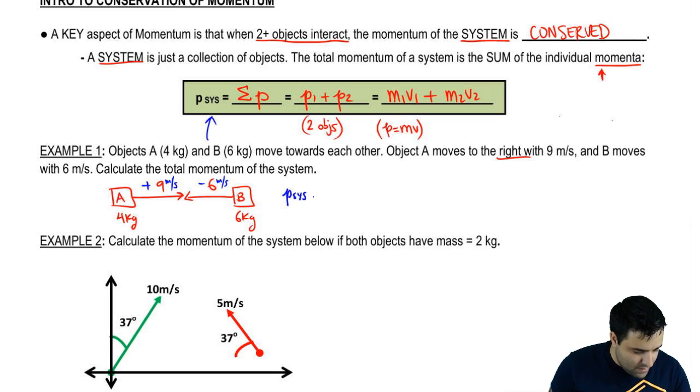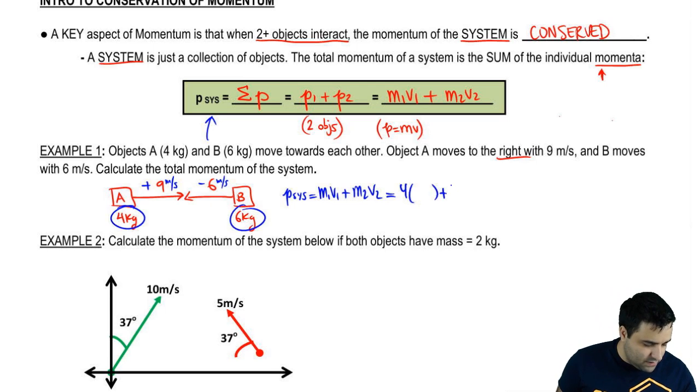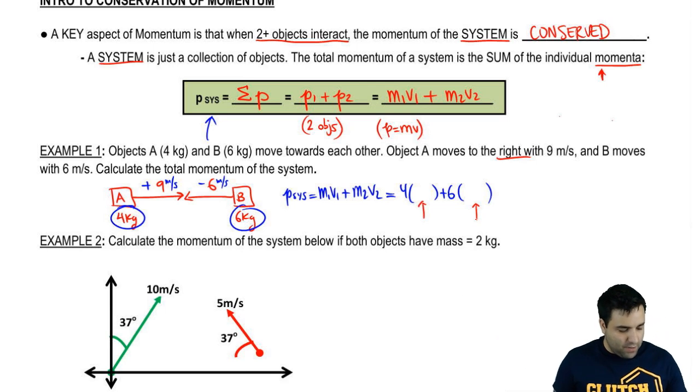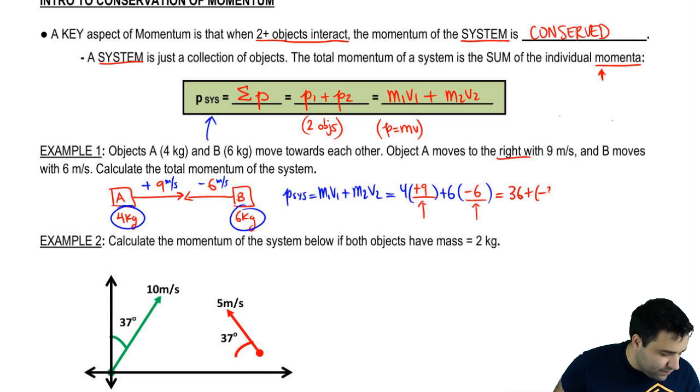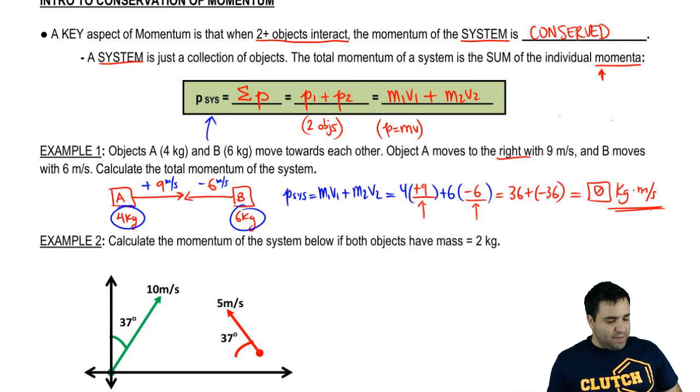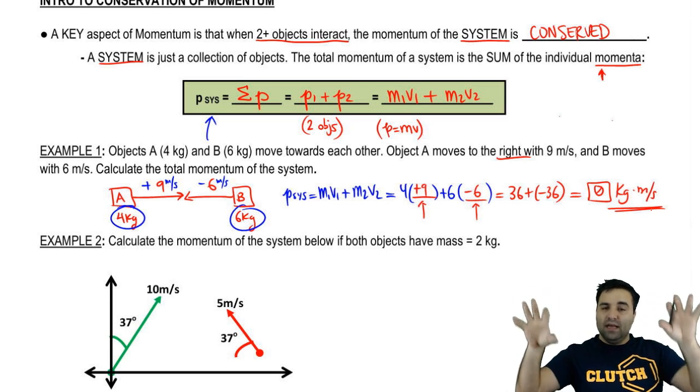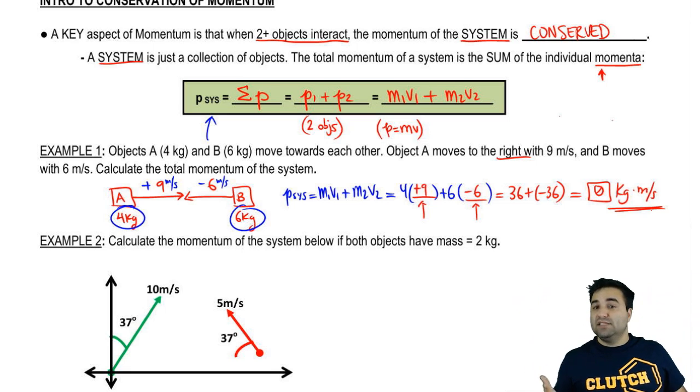P system is M1V1 plus M2V2. That's it. So what I like to do is I look at the masses four and six, and I do this: four, parenthesis, six, parenthesis. And then I slow down. I try to figure out what number goes here. This is the velocity of the four, which is plus nine. And this is the velocity of the six, which is minus six. When you do this, you have 36 plus negative 36, which is zero. Zero kilograms meters per second. Now I did this on purpose just to make the point that just because you have two objects moving, it doesn't mean that their collective momenta is a non-zero number. If the momentum of this guy is 10 and this guy is 10, they add up to zero. So just in case you see something like this, you're not weirded out. This is perfectly fine.